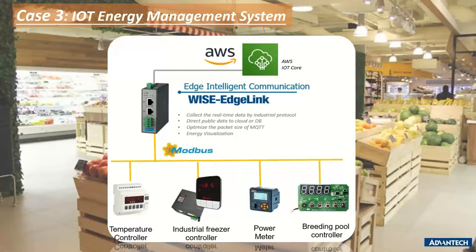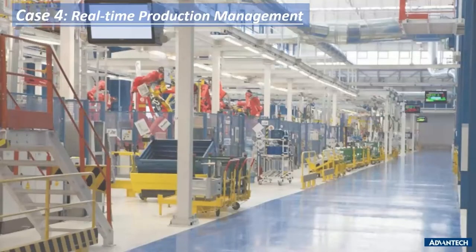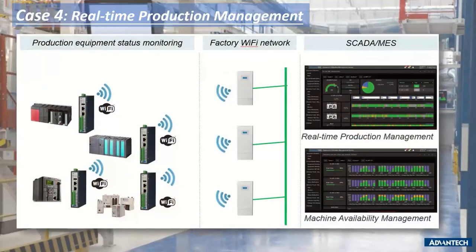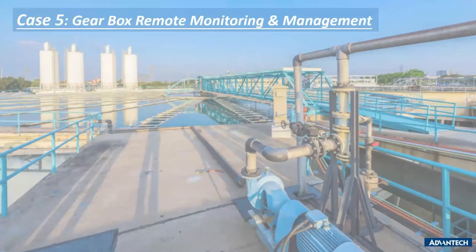Case four is a real-time production management system. This factory customer wanted a production management system while avoiding complex wiring and reducing cable costs. We implemented our IoT gateway with Wi-Fi to link with their Wi-Fi-enabled machines, collecting and pushing data to their SCADA/MES system for real-time production and machine availability management. Case five is a gearbox remote monitoring system for a wastewater treatment plant with multiple gearboxes and motors for water pumping.